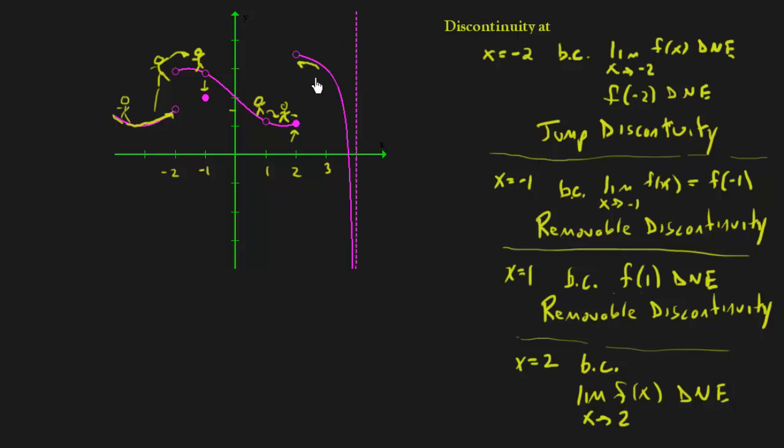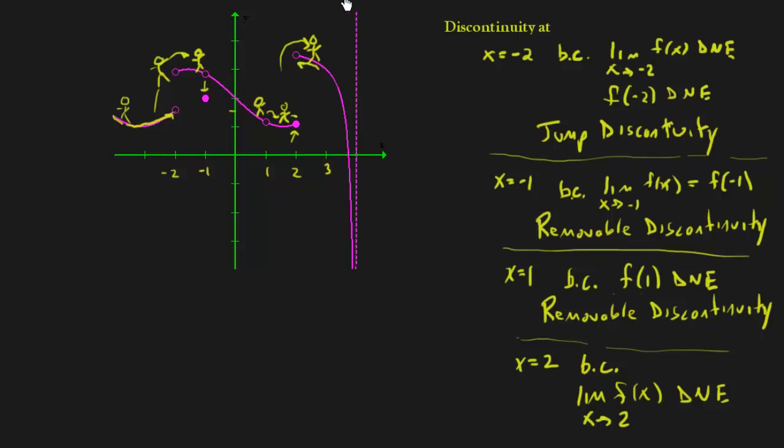Alright, now on to our last one. We have our stick figure finally jumped up here and is now walking along the graph. Now notice what's going to happen is it's going to hit this wall right here. We call that a vertical asymptote.